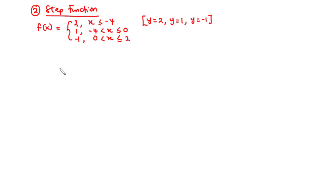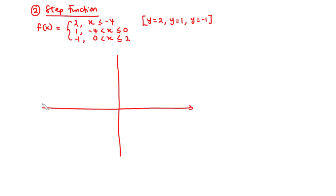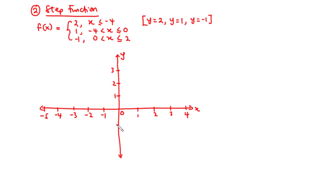So how do we graph this step function, and what is the domain and range of this function? First, let's draw the xy plane. We have the y-axis, the x-axis, marking 0, 1, 2, 3, 4 and negative 1, negative 2, negative 3, negative 4, negative 5 on the x-axis, and on the y-axis we have 1, 2, 3, and negative 1, negative 2. For the first constant function, f of x equals 2, or y equals 2.